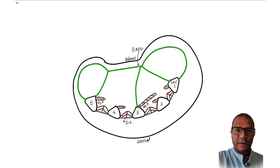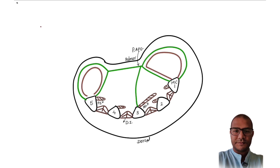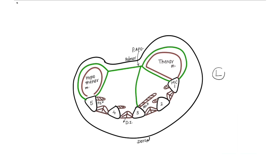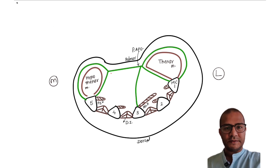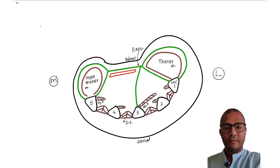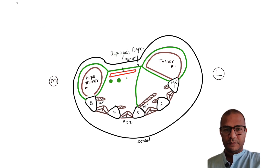Next we will draw hypothenar and thenar muscles. In the medial compartment we will draw the superficial palmar arch below the palmar aponeurosis. Below the palmar arch we will draw tendons of flexor digitorum superficialis — three tendons in the medial compartment and one tendon in the lateral compartment.